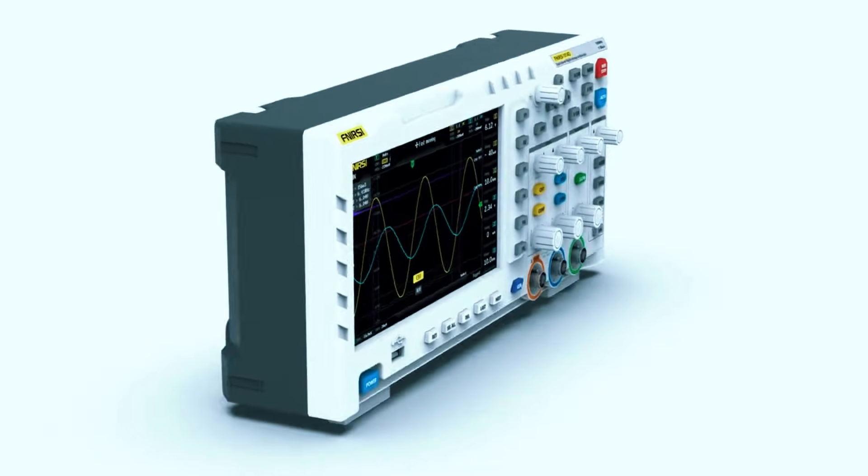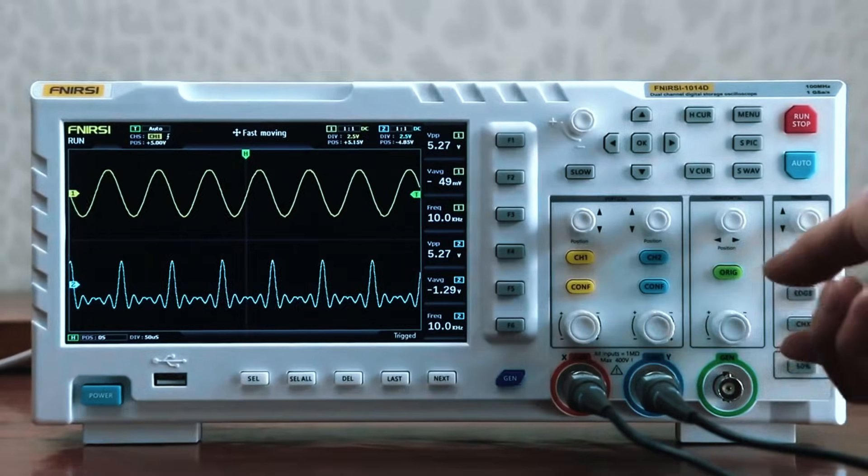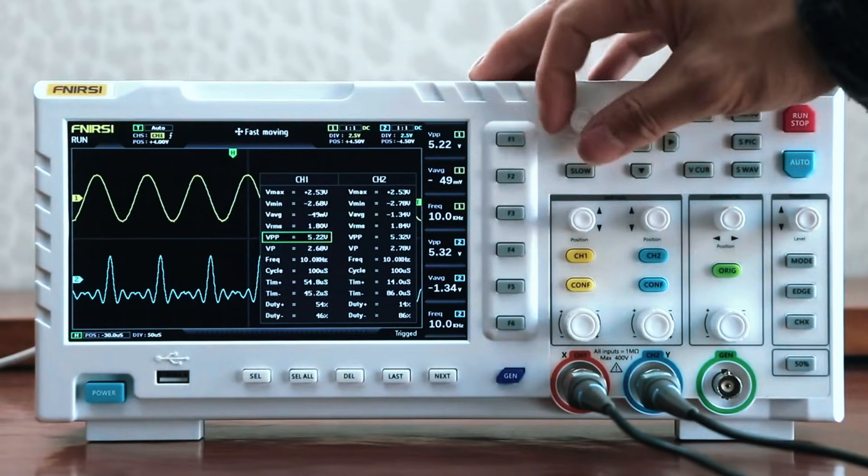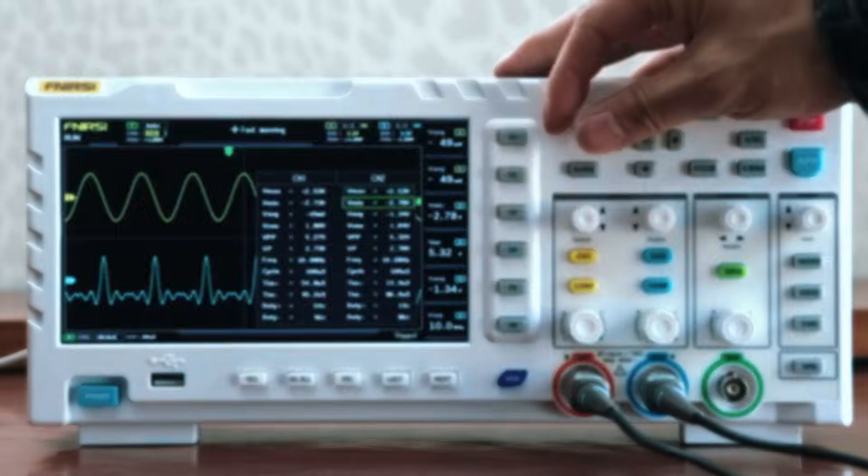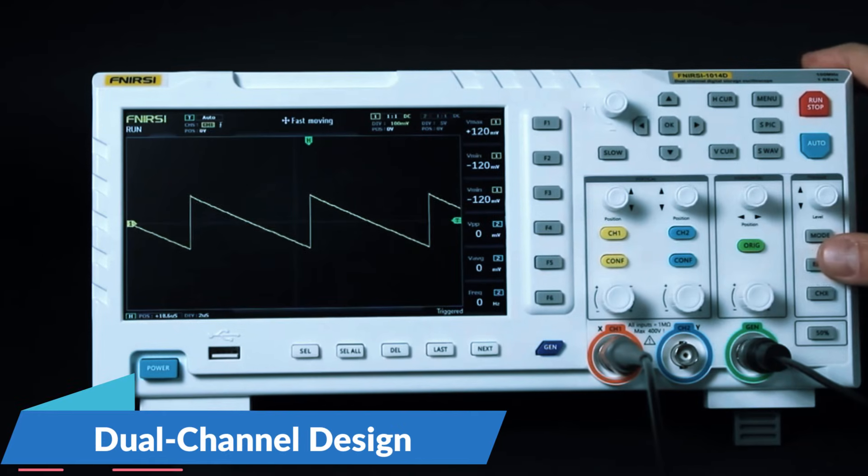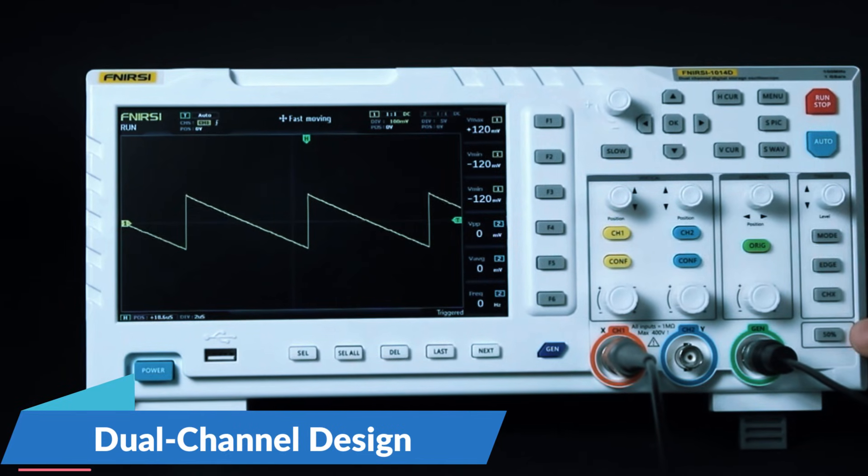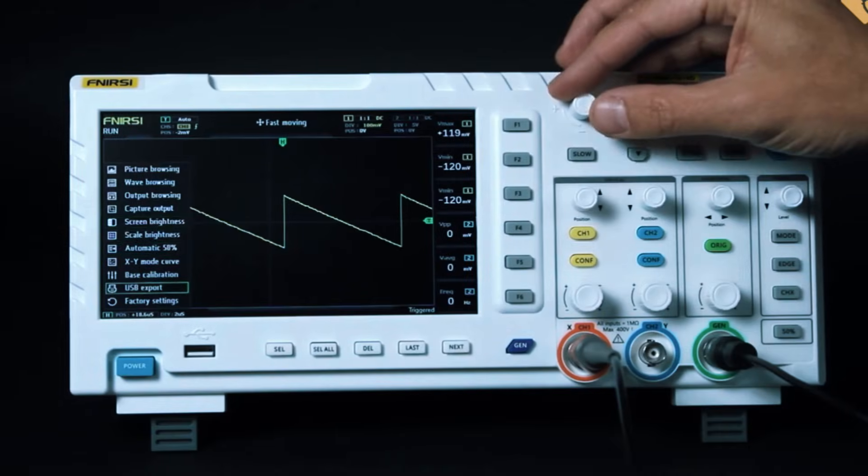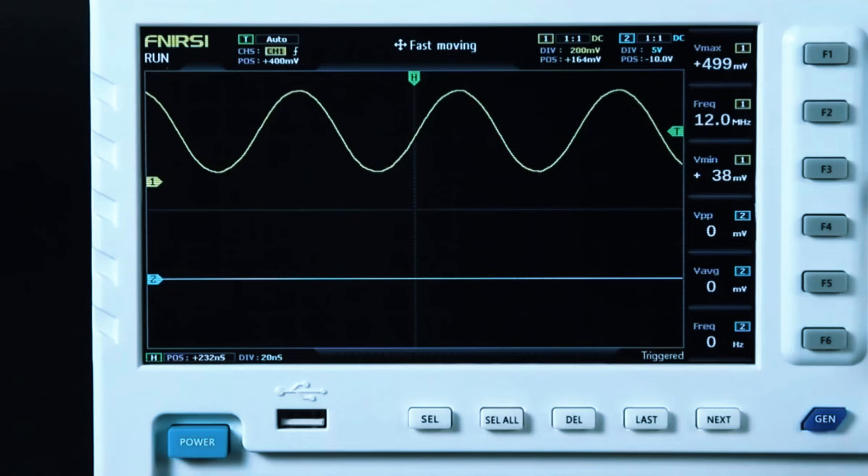While it may not have all the advanced features of high-end models, it packs enough power to handle basic signal analysis, circuit debugging, and waveform observation without breaking the bank. This oscilloscope offers a dual channel design with a 100 MHz bandwidth, making it suitable for most entry-level electronics work. The 1 giga samples per second real-time sampling rate ensures that waveforms are captured with decent accuracy and clarity.